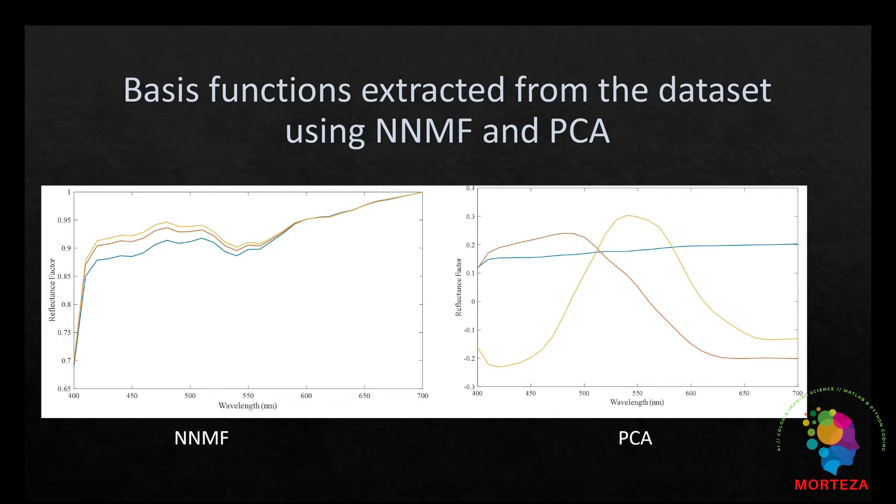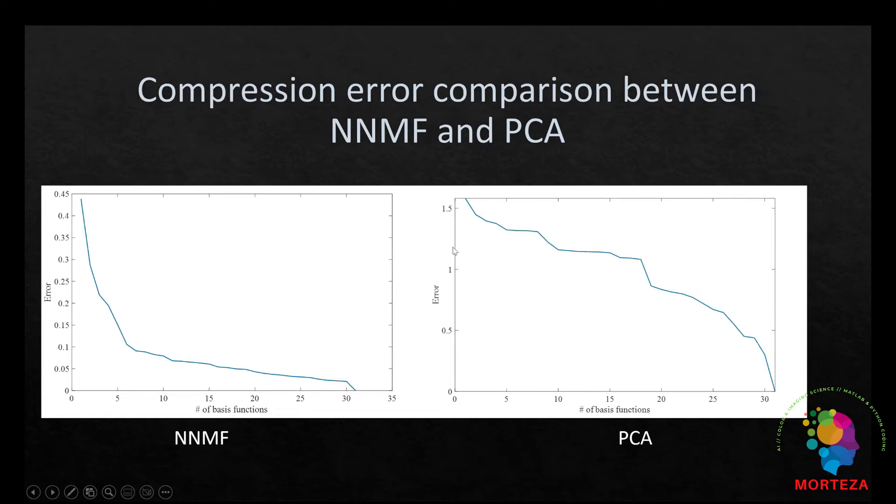Some people sometimes call the NNMF basis functions realistic basis functions as they don't have any negative value. It should be noted that both sets of basis functions comprise basis functions that are orthogonal to each other and it is interesting to see how different these two sets are. The first one in the PCA is the average, but in this case they are much more similar to each other, though they are all orthogonal to one another.